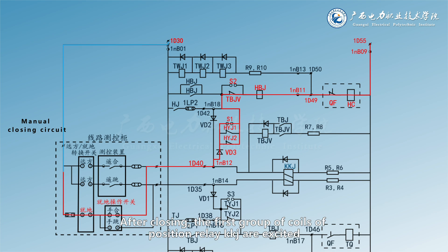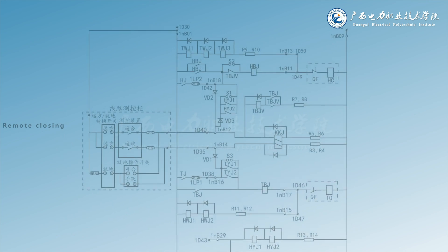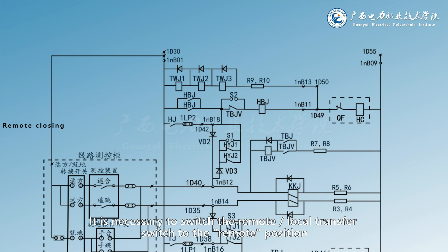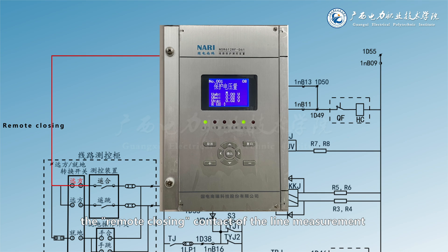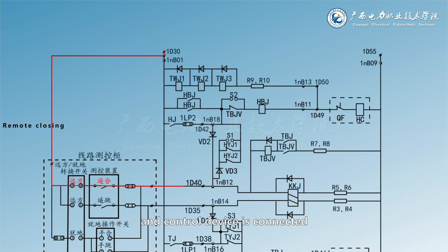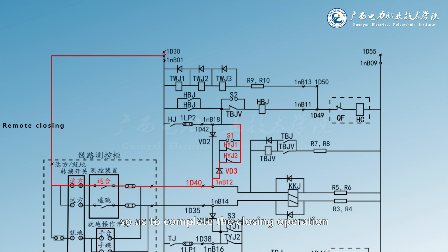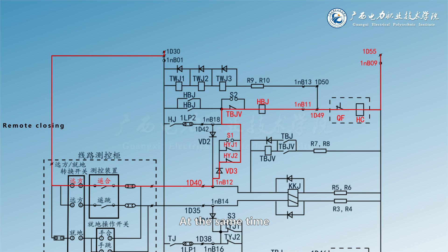At the same time, after closing, the first group of coils of position relay KKJ are excited. KKJ acts and self-holds. The positive power supply is also sent to terminal 1D40 of the protection cabinet and terminal 1NB12 of the protection device so as to complete the closing operation. The path of closing current is similar to the above local closing. At the same time, the remote closing operation will also make the closed position relay KKJ act.